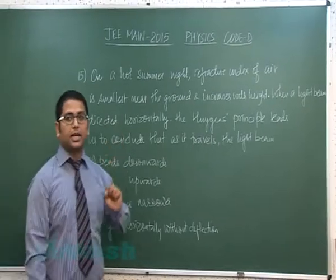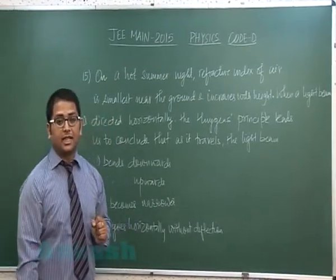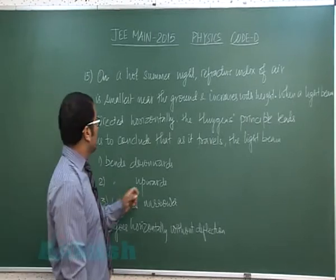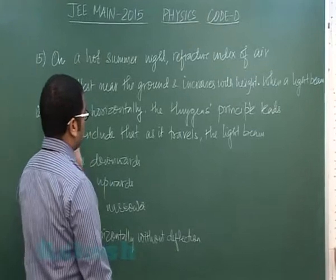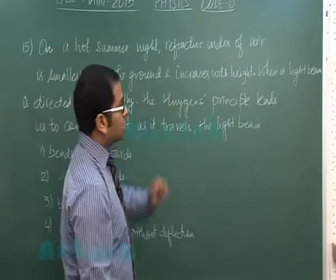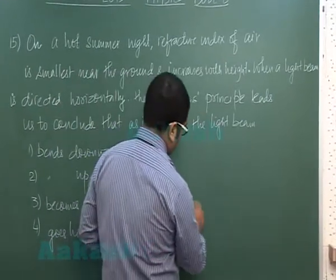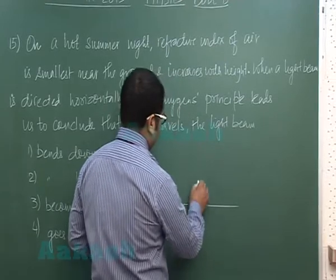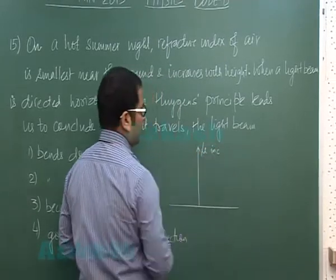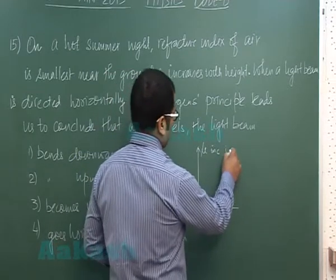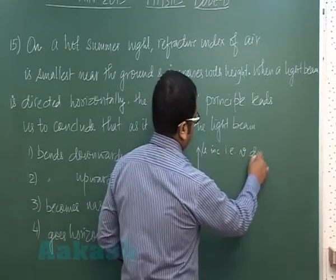Question number 15 is another good question set from wave theory of light. It says on a hot summer night, refractive index of air is smallest near the ground and increases with height, so it means as I go above the value of mu increases. But if mu increases, of course the speed of light decreases because we know that has an inverse relation.